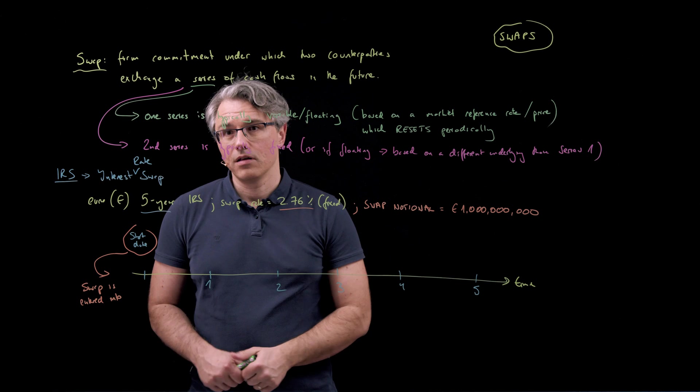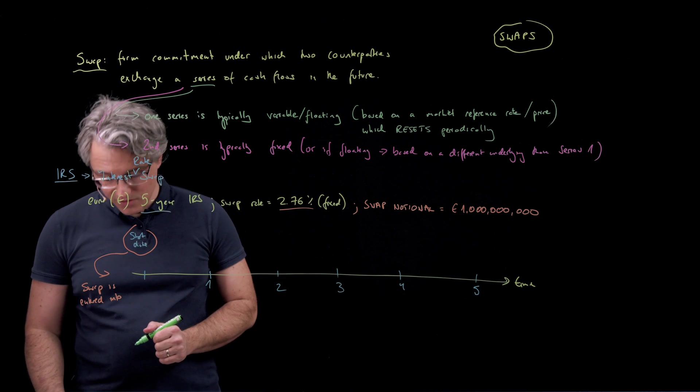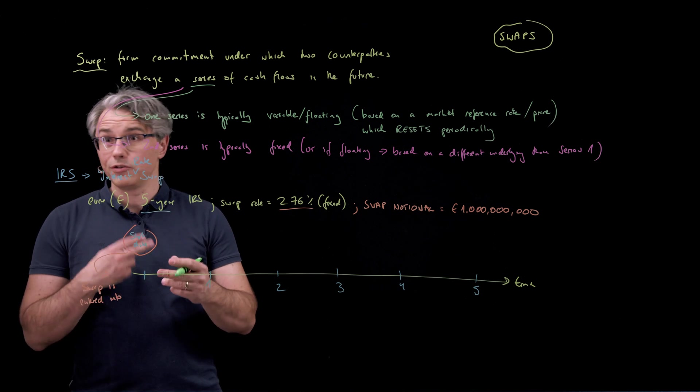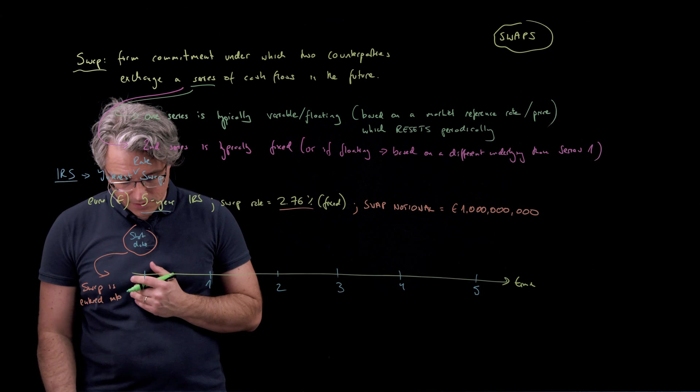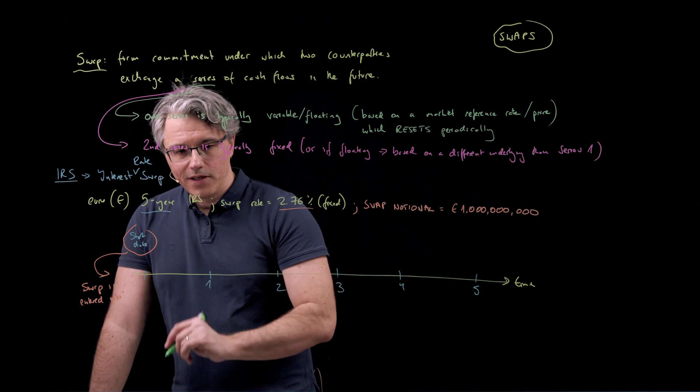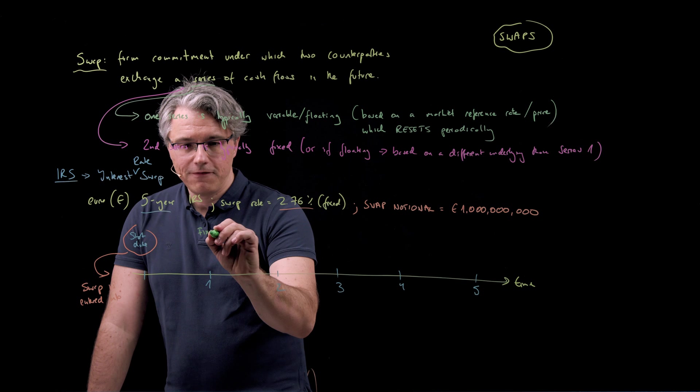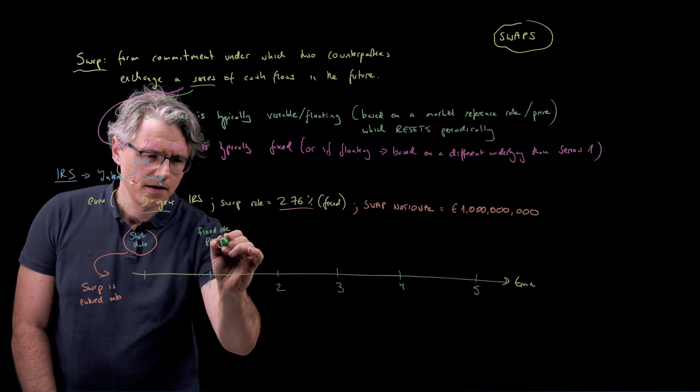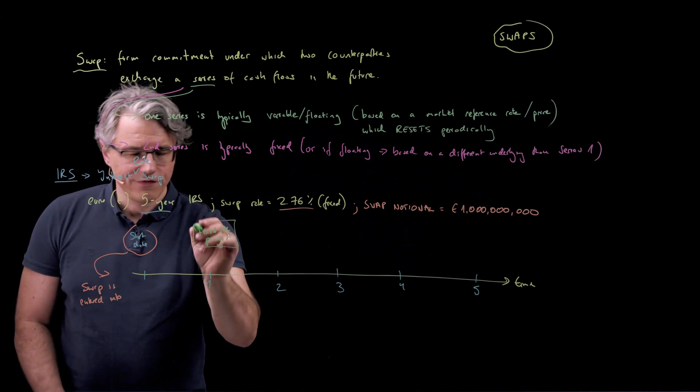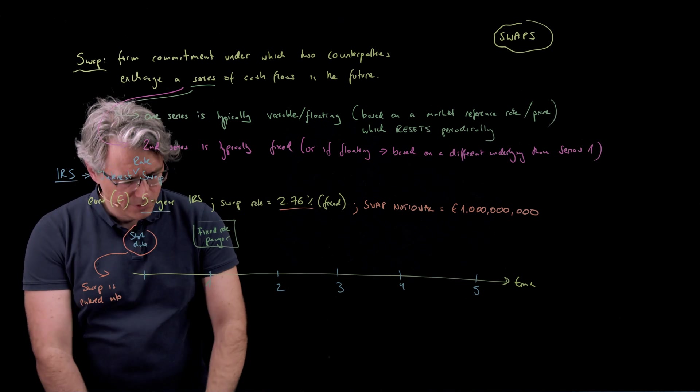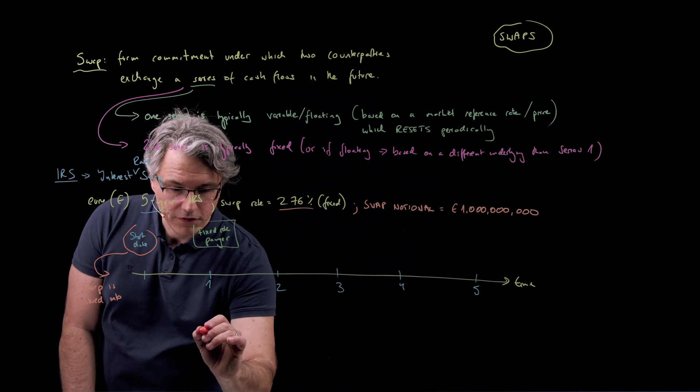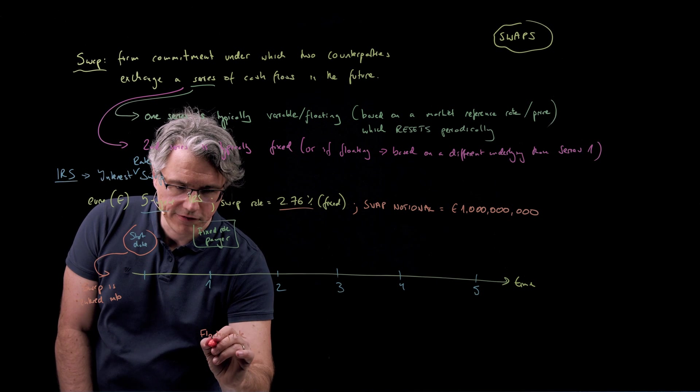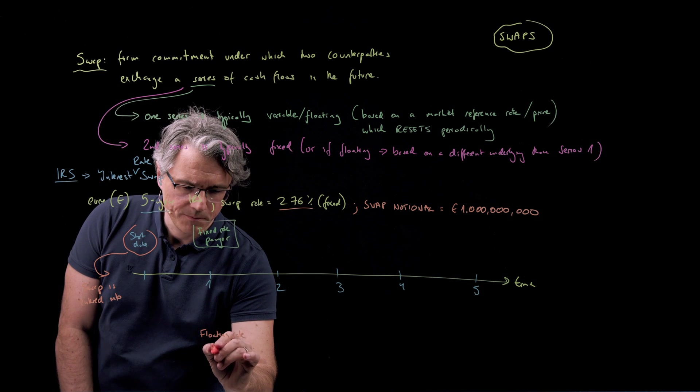at the subsequent dates, those settlement dates, you're going to have two sides, the two counterparties, meeting sort of continuously. One of them will be the fixed rate payer, and the other is someone we're going to refer to as the floating rate payer or the variable rate payer. Floating and variable are synonyms.